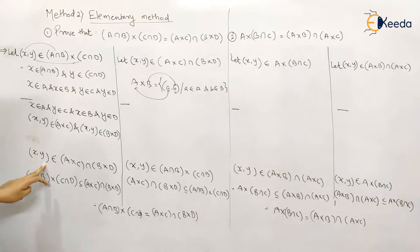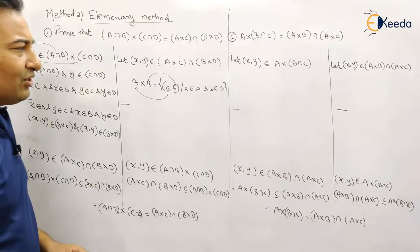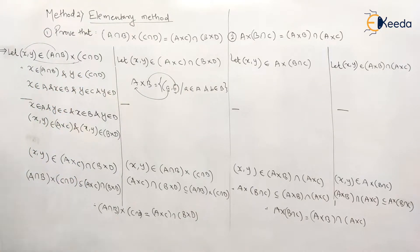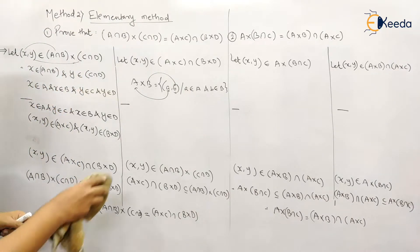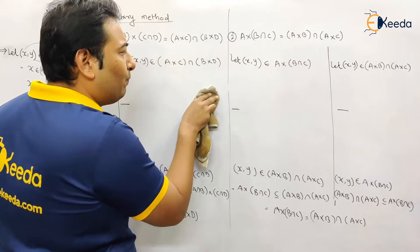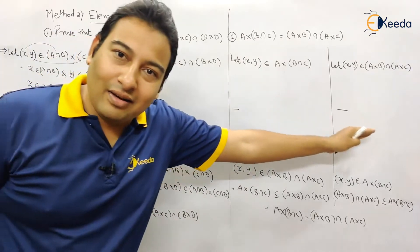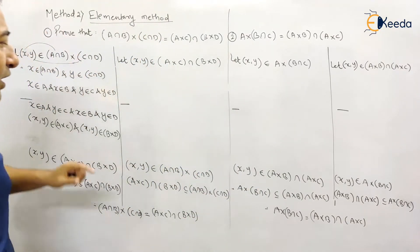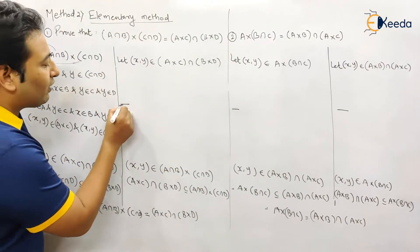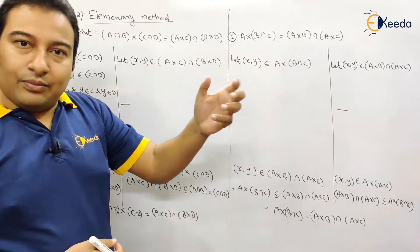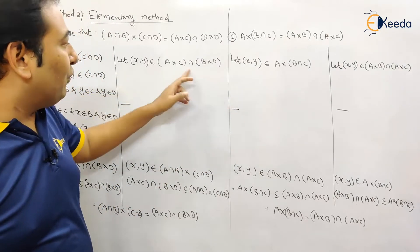Therefore we proved x comma y belongs to RHS, and therefore LHS is a subset of RHS. For the second part, the aim is again to separate all terms. x comma y belongs to RHS, which is A×C ∩ B×D.